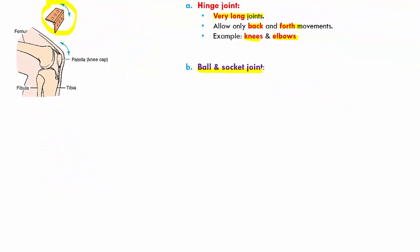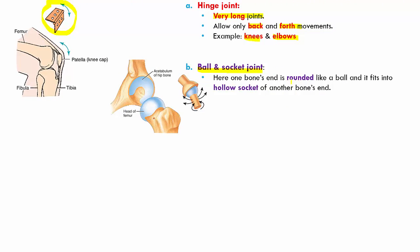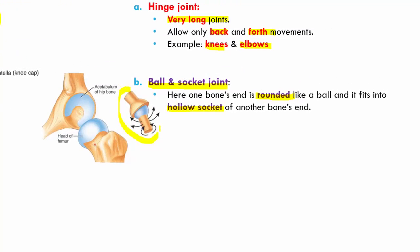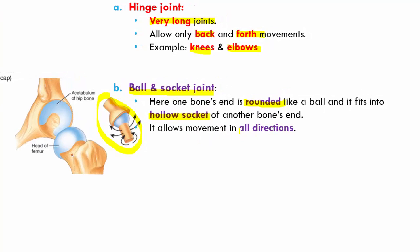Then we have the ball and socket joint. Here, one bone is generally rounded like a ball and the other is hollow, into which this ball-like bone fits. So we have a hollow socket on one bone and a ball on the other, and they fit into each other. This allows movement in all directions — 360 degrees. Examples are your hip and your shoulder. Try moving your arms 360 degrees; you can, because of the ball and socket joint present in your shoulders.